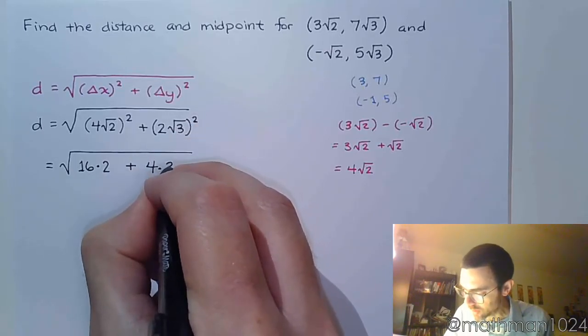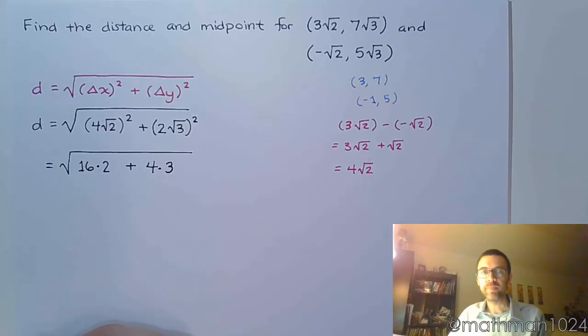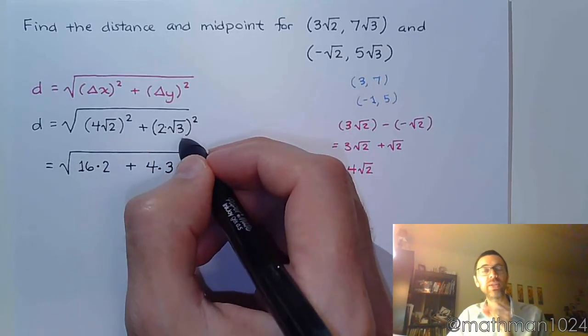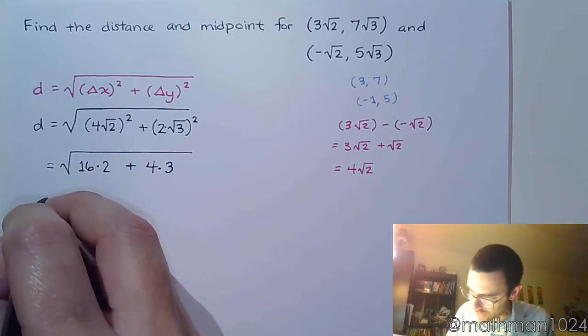And then plus square the 2 to get 4. Square the square root to get 3. So since this is a product, when you raise it to a power, you just raise each factor to that power. And now let's clean this up.